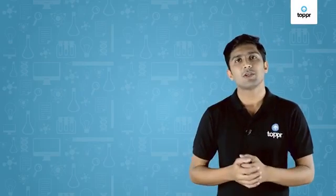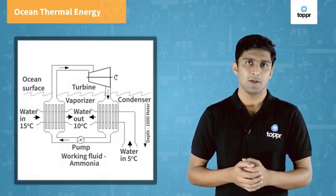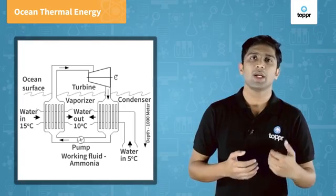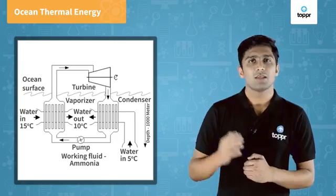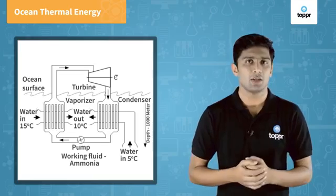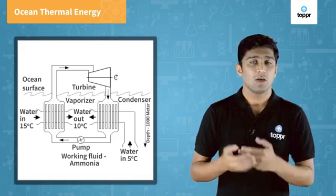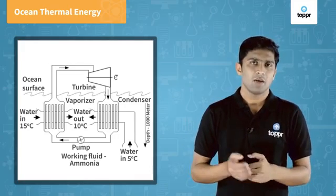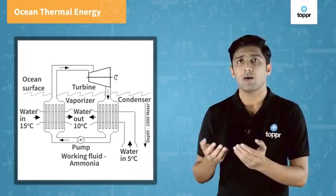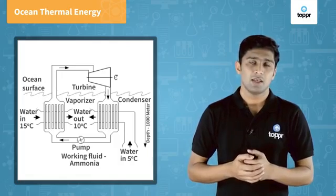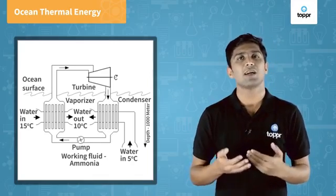The next form of non-conventional energy from the sea is ocean thermal energy. The water at the sea surface is hot during daytime while the water at a lower level is cold. This temperature difference can be used to generate energy. If the temperature difference is more than 20 degrees Celsius, we can utilize ocean thermal energy. For this, a volatile liquid like ammonia is boiled using the heat of the hot water at the surface, and the steam produced is used to run a turbine to generate electricity.